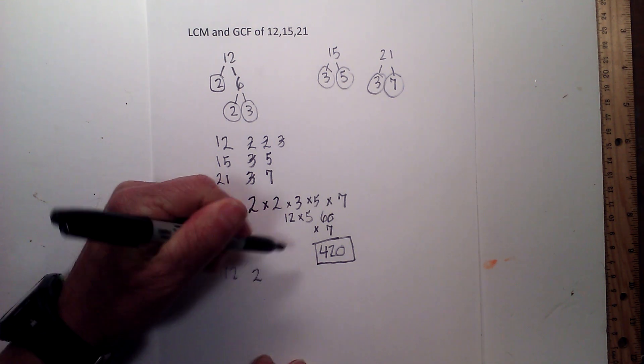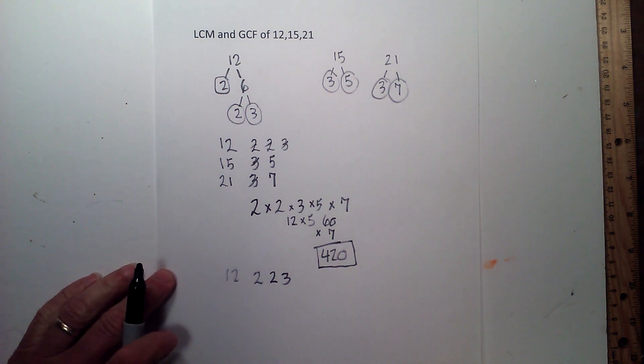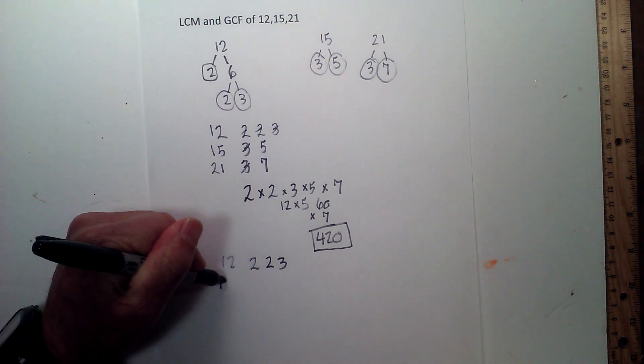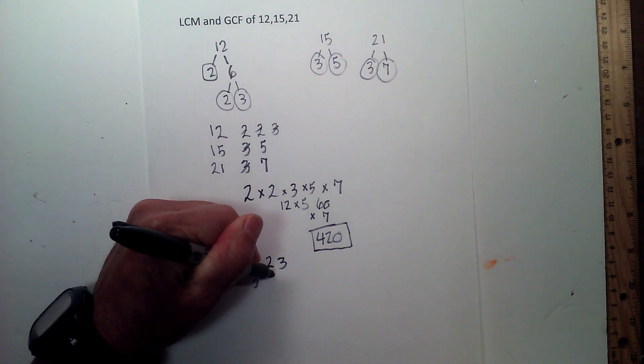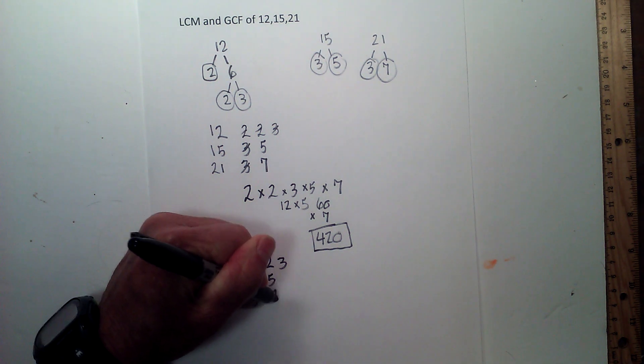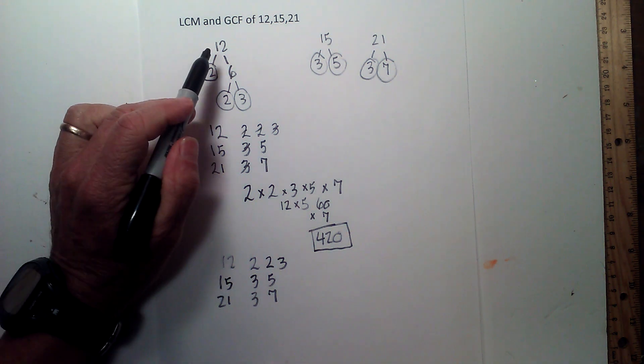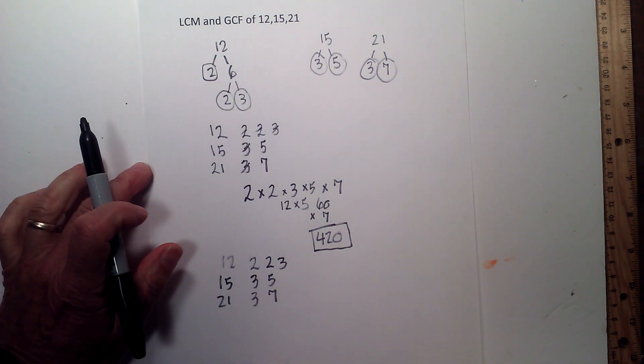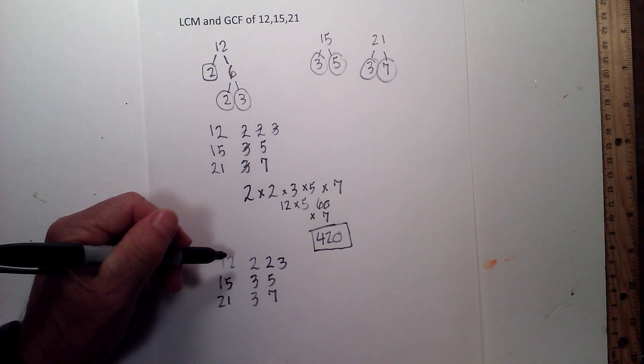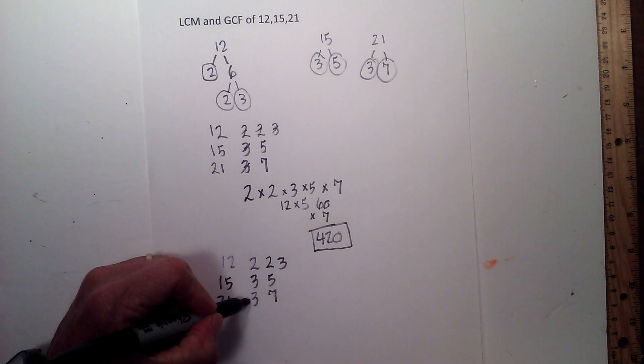2, 2, and 3 for 12, and then for 15 I have 3 and 5, and for 21 I have 3 and 7, and for the greatest common factor, which is the largest number that will divide in all 3 of the numbers evenly, I find the one number that is in all 3 numbers, and in this case it is 3.